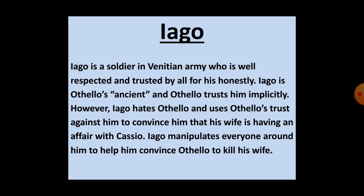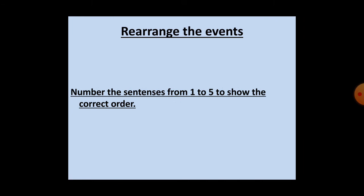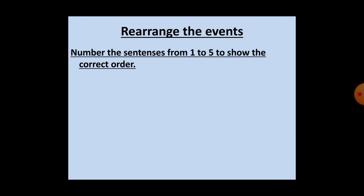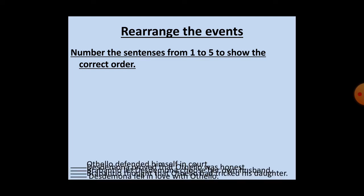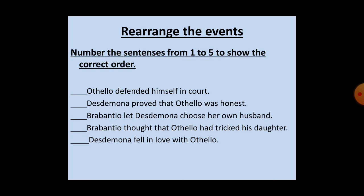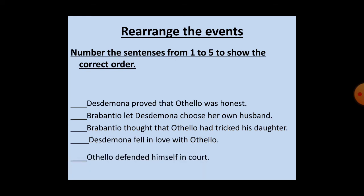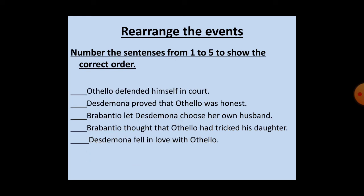Now I move towards the Rearrange the Events exercise. In this exercise you are supposed to arrange five sentences in the order in which events take place. The five sentences are: Othello defended himself in court; Desdemona proved that Othello was honest; Brabantio let Desdemona choose her own husband; Brabantio thought that Othello had tricked his daughter; and Desdemona fell in love with Othello. The correct order places sentence four first and sentence five last.